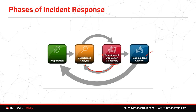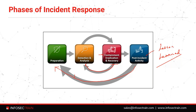Then we have post-incident activity — this is like a lessons-learned phase. Every stage and every activity is documented. We analyze all the activities: how we handled the incident, how we contained it, why the incident happened in the first place, what vulnerability was exploited, and what was the root cause. We sit together, have a meeting, discuss how we can do better, whether we need to redefine policies and procedures, and whether new security controls need to be added. Whatever decisions we take feed back into preparation — for example, adding a new firewall strengthens our security. We make sure such incidents never happen again.